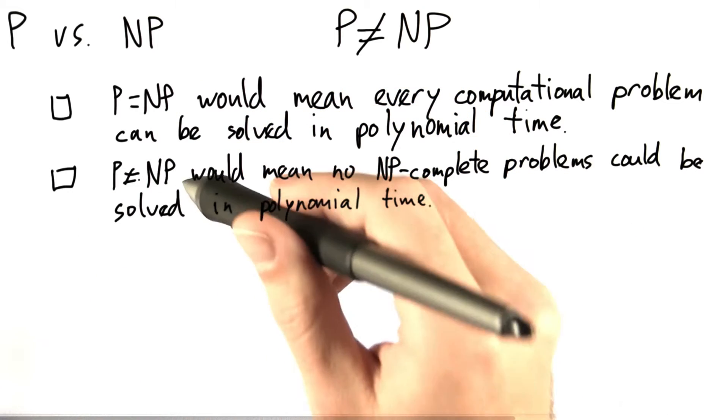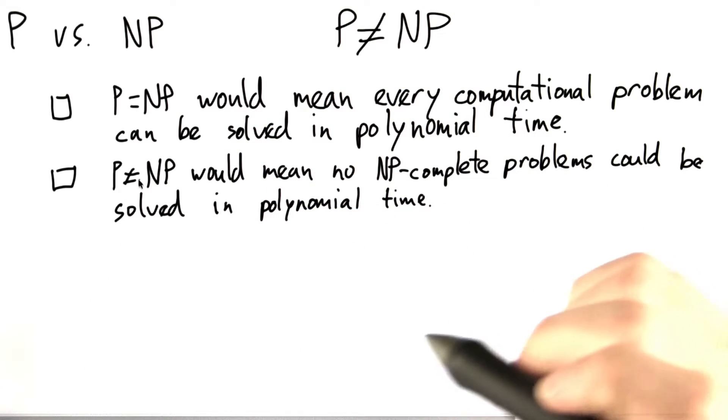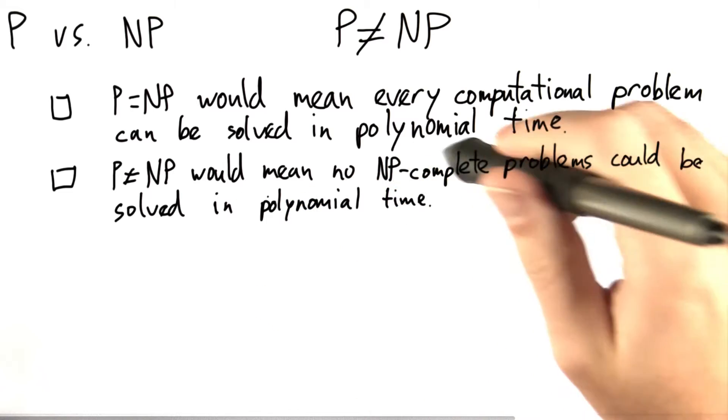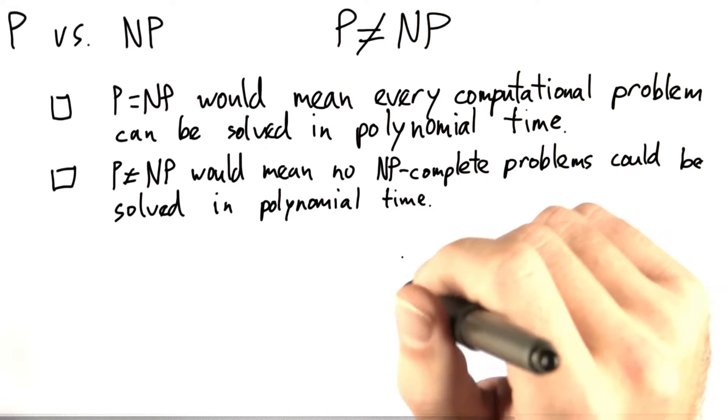It could also be the case that if P were not equal to NP and we could prove that, then that would mean that there are no NP-complete problems that could be solved in polynomial time.